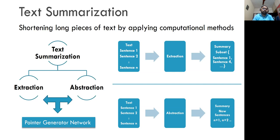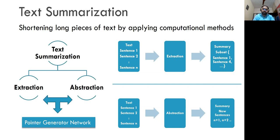Basically, the pointer generator network is a combination of extraction as well as abstraction. When we say 'pointer,' it's going to extract the important keywords — that's extractive summarization. Then based on those keywords, it's going to generate a new combination of keywords or maybe the meaning of those keywords, generating new information. So the pointer extracts information from existing text, and the generator generates new information based on that text. Pointer gives us the idea of what to extract and what to generate.